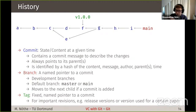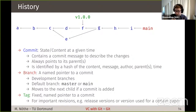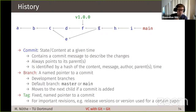Besides branches — named pointers that move along — you can also have fixed named pointers to commits called tags. Tags are used for very important revisions, such as release versions of software: version 1.0.0, the software version used for a specific paper, the version before corrections, after the first round of reviewer comments, and the final version. These should all be tagged so you can easily find them afterwards.